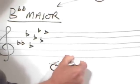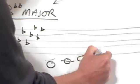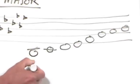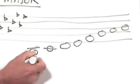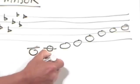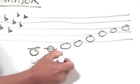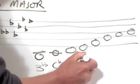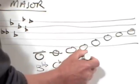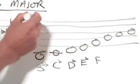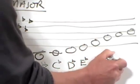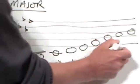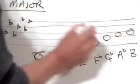B, C, D, E, F, G, A, B. So let's name them: B double flat, C flat, D flat, E flat, F flat, G flat, A flat, and B double flat.